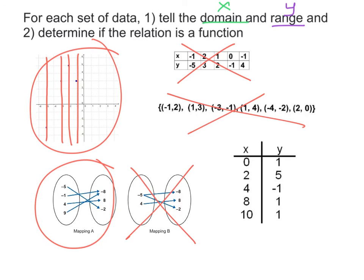And the mapping on the right: every value of the input is different, so none of them could have a different output. Be careful here — sometimes people think that since there's a 1 in the output twice, that makes it not a function. But it is a function. Two different meals can cost the same price — it's just that one specific meal cannot be charged two different prices.